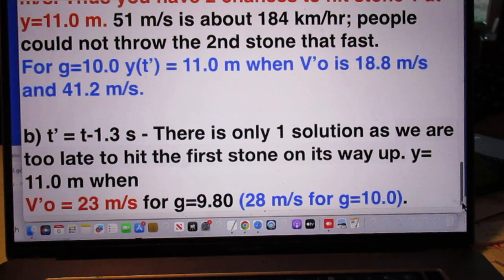Now the solution is, it's the only one, that v prime zero is 23 meters per second in the case that g is 9.80. If you take g equals 10, then you find 28 meters per second.